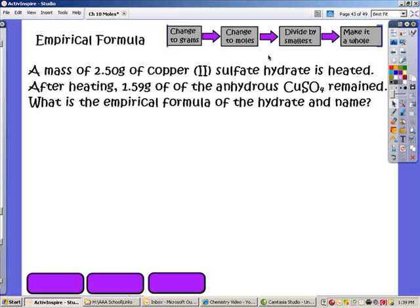The difference this time is with hydrates, we're going to be looking at how much of it is the anhydrate and how much of it is the water. And so when we change it to grams, we're going to be changing the anhydrate to grams, changing the water to grams, changing the water or the anhydrate to moles, then dividing by the smallest one of those, which is normally the anhydrate, and then making it a whole, which a lot of times we don't have to do this step. In fact, I can't think of any examples where we have to do that last part of it.